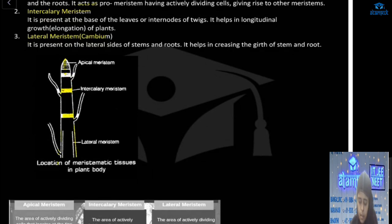Intercalary meristem increases the elongation of the plant. Lateral meristem increases the girth of the plant.